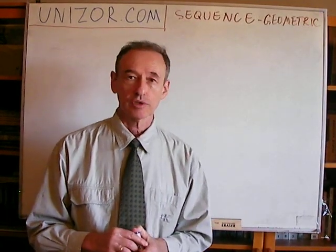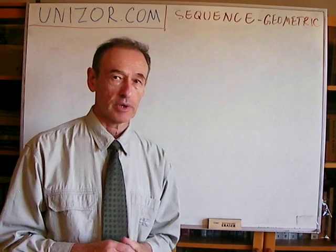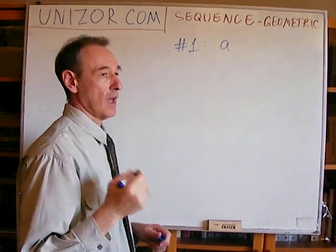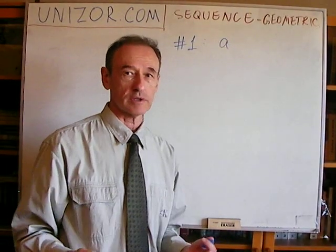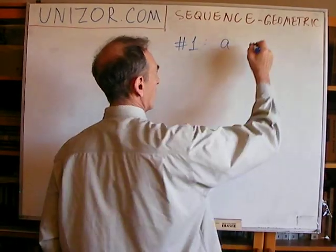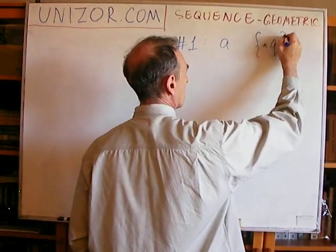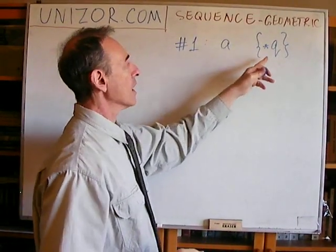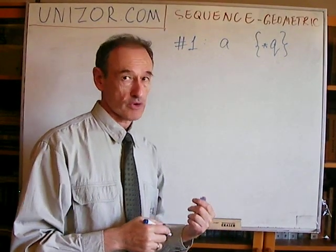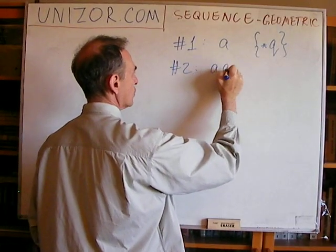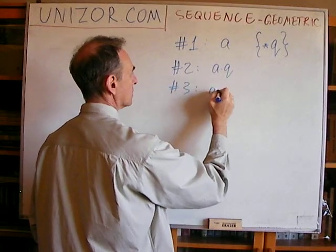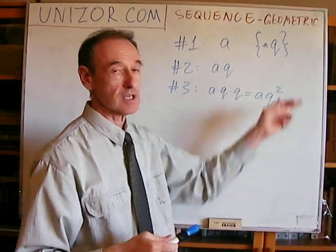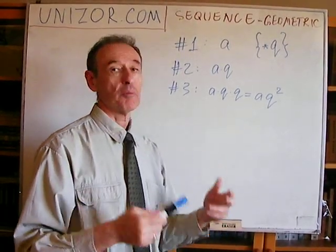Let me start with a definition. What is a geometric progression? First, you have to choose the first element. You also have to choose something which is called a quotient, or a factor, or a multiplier. All other elements of this sequence are formed sequentially, starting from one, by multiplying by this quotient. So geometric progression is multiplying by the same number, whereas arithmetic progression was adding the same number.